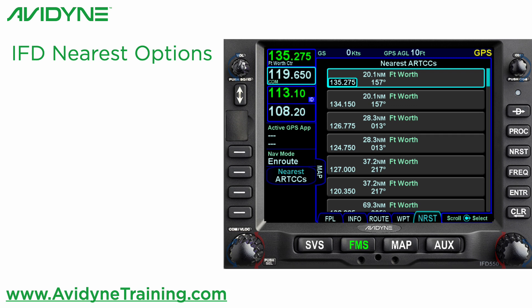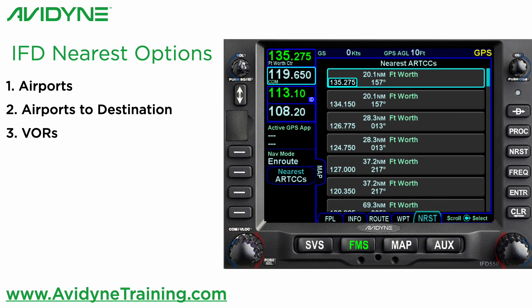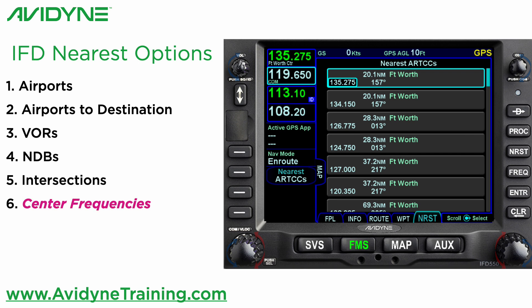The IFD is very smart, and every time you push the nearest button on the 540 or 550, it will cycle to the next nearest database it has. It always starts out with the nearest airports to your present position. Pushing it a second time takes you to the nearest airports to your destination in your flight plan. A third press will show you the nearest VORs, then the nearest NDBs, the nearest intersections, and as shown on this screen, the nearest air route traffic control center frequencies.